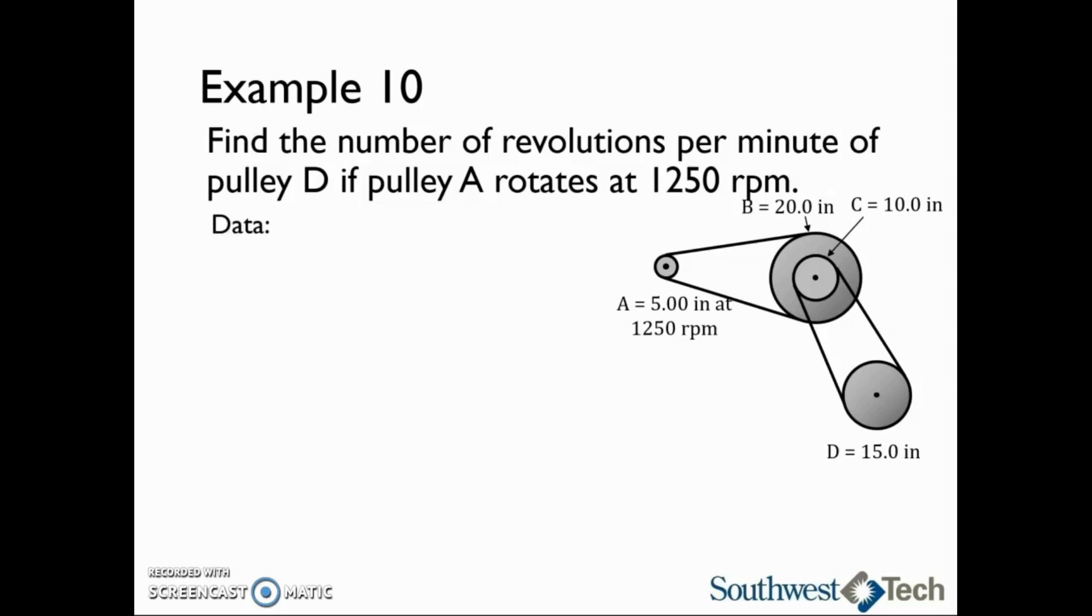Let's write down all of the information we know. We know capital N, the speed of the driver, is 1250 RPM. We are trying to find lowercase n, the speed of pulley D. We know the first driver pulley is pulley A, and it has a diameter, capital D1, of 5.00 inches.